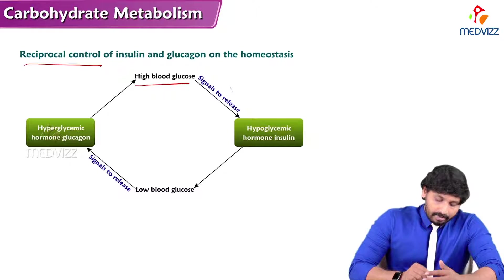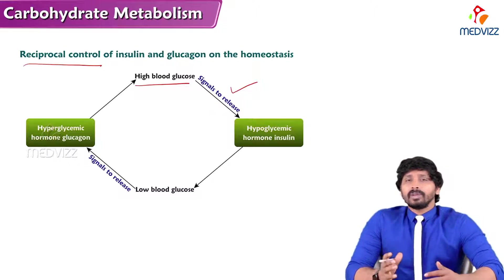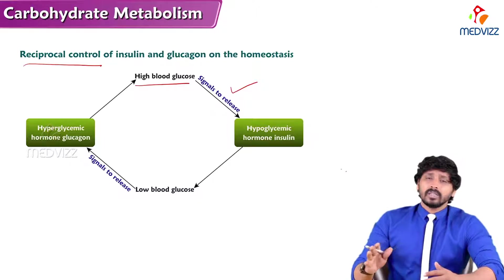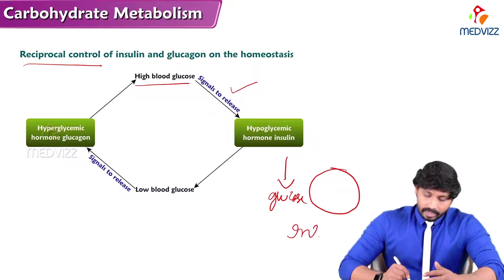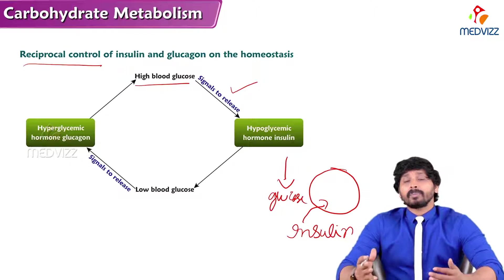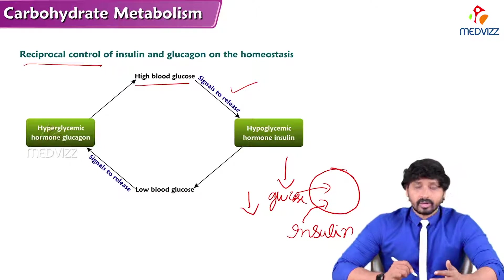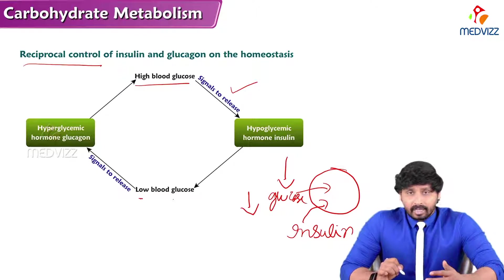As seen in the diagram showing reciprocal control — they oppose each other's actions. When there is a high blood glucose level, there is a signal to the pancreas to release insulin. Insulin comes into action and promotes more glucose to enter into the cells, increasing cellular uptake of glucose. As glucose enters inside, the blood glucose levels in circulation tend to come back to the normal range — that is why insulin is a hypoglycemic hormone.